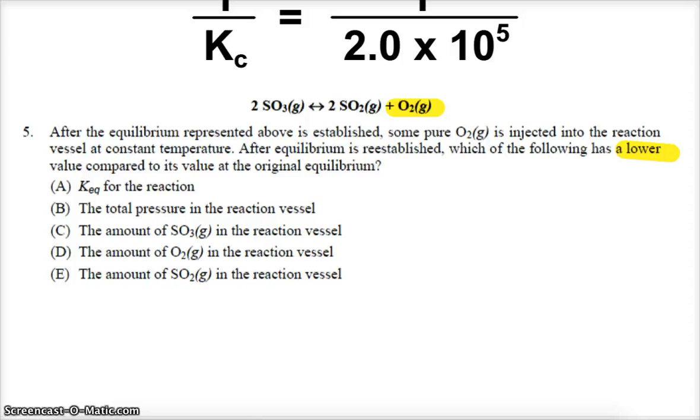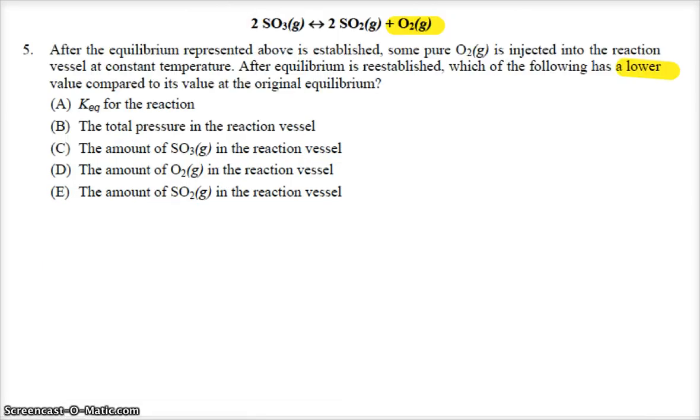Question 5 here. We see sulfur trioxide decomposing into sulfur dioxide and oxygen. It says after the equilibrium is established, some pure oxygen is injected into the reaction vessel at a constant temperature. Why we're injecting product, I don't know. This is the question. Equilibrium is reestablished. Which of the following has a lower value compared to its value at our first equilibrium?